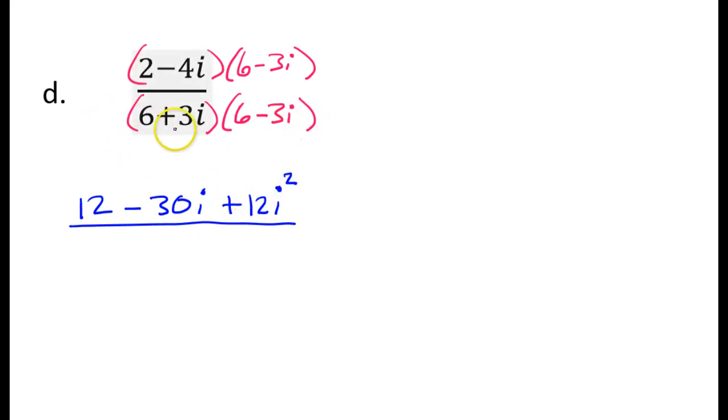In the denominator, 6 times 6 is 36. Inner, I have positive 18i. Outer, I have negative 18i. Those are going to cancel each other out. Maybe I'll just show it for one more second. I have positive 18i. So notice how those cancel each other out. And then I have 3i times negative 3i. So that's negative 9i squared.